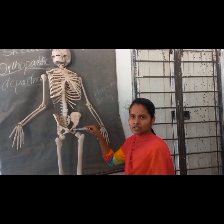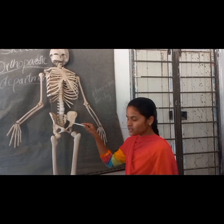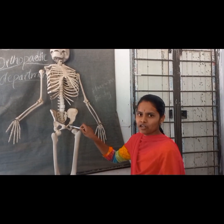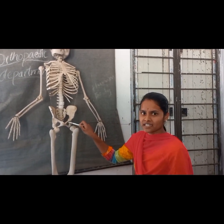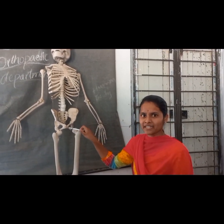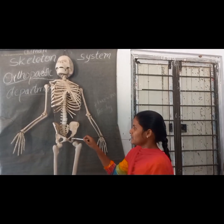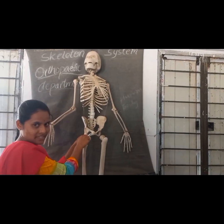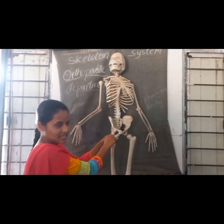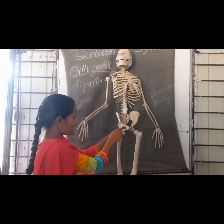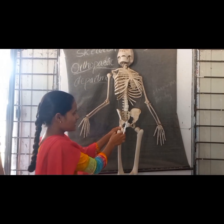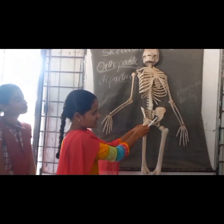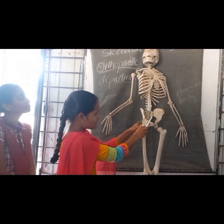At the point of fusion of these three bones, there is a cavity. This hollow cavity is present on each side of the pelvic girdle. In the acetabulum cavity — this cavity is called the acetabulum cavity — the head of the femur bone fits in to form the hip joint. This is the hip joint.